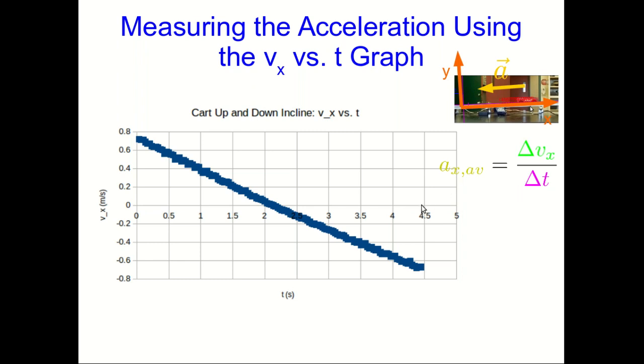And so this ax average can be thought of as a slope on our vx versus t graph.